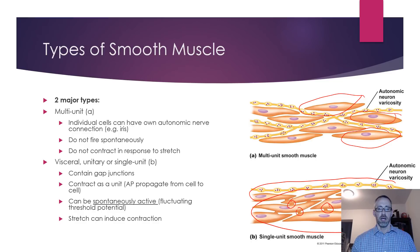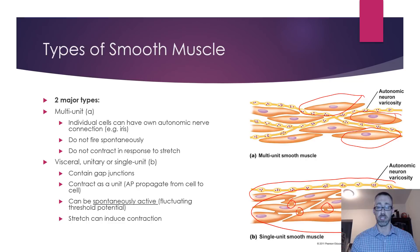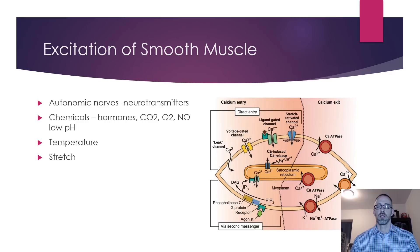Single-unit smooth muscle can spontaneously depolarize — like pacemaker cells, which are specialized cells that can activate sections of the digestive tract to contract and constrict. This is far more useful than trying to fine-tune movement of food particles. Single-unit smooth muscle can also contract in response to stretch, as seen in the digestive tract or the bladder.